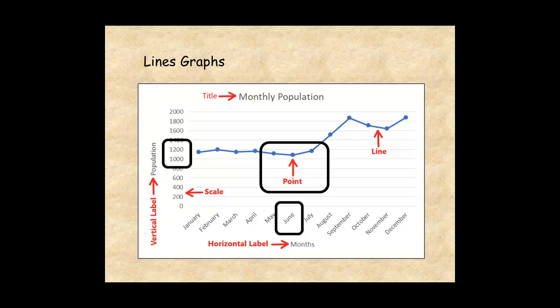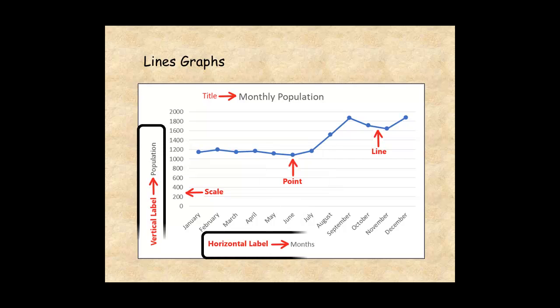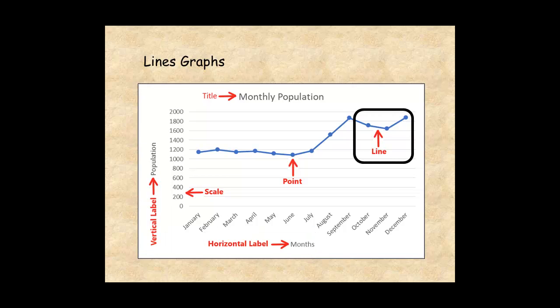Each axis on a line graph has a label that indicates what kind of data is represented. A line is drawn by joining the points on the graph together. The line is the actual graph, while the other parts of the graph are guides to help you understand the line.